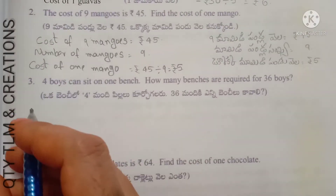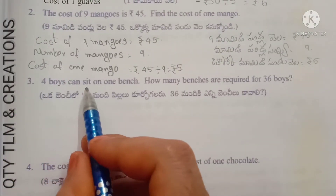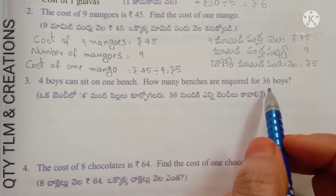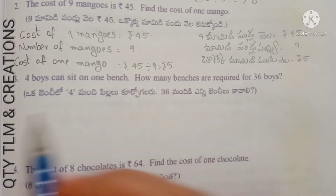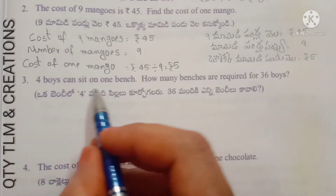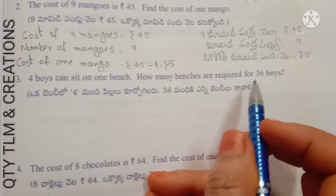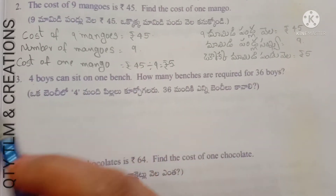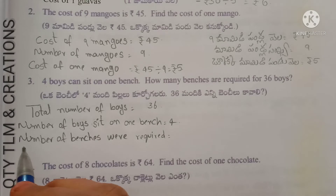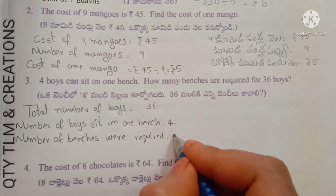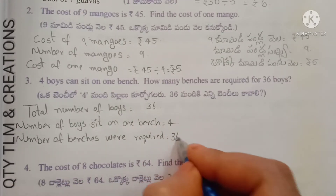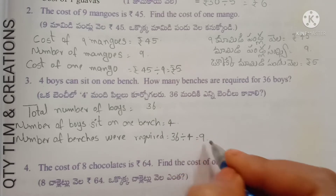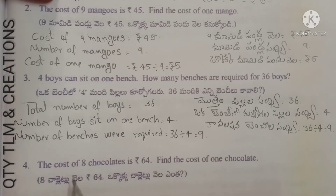Next question: 4 students can sit on one bench. How many benches are required for 36 students? Total number of students = 36. Number of students per bench = 4. Number of benches required = 36 divided by 4 = 9 benches.